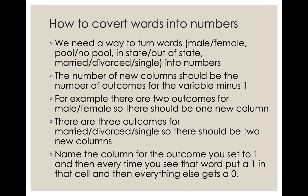There are three outcomes for married, divorced, and single, therefore there should be two new columns. It's important to name the column for the outcome that you set to one — every time you see that word, put a one in that cell, and everything else gets a zero. For example, if one is in-state and zero is out-of-state, the column should be named in-state. That gives the person looking at your regression information as to what the one actually means.